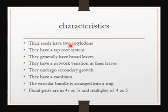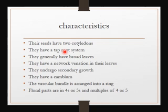They have a taproot system. A taproot system is a type of root system whereby we have a main root which develops from the radicle — the part of the seed embryo which becomes the root. So there is a main root from the radicle, and this main root begins to give out smaller side branches which we call lateral roots. In science, the word 'lateral' means 'side.'